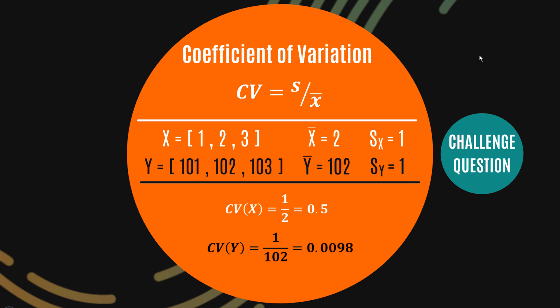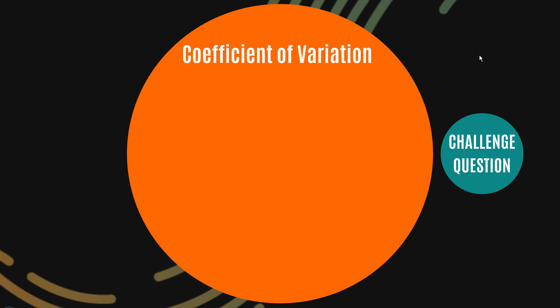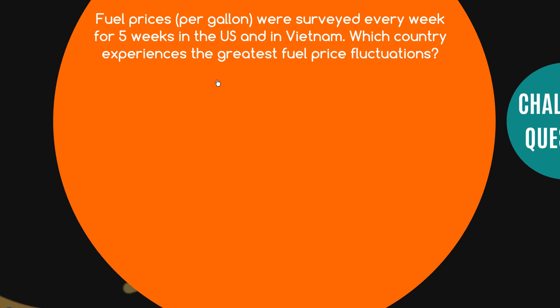So where would this actually come up in reality? Other examples where we'd need the coefficient of variation? Check this out. I've got a question here that says fuel prices per gallon were surveyed every week for five weeks in the US and in Vietnam. Now let's try to figure out which country experiences the greatest fuel price fluctuations. So here are the two data sets, and here are the five fuel prices sampled in the US and here are the five fuel prices sampled in Vietnam.